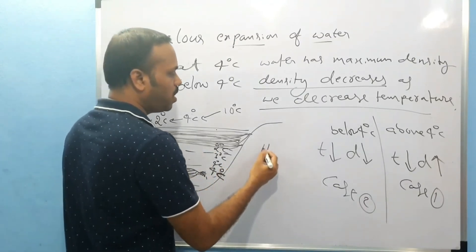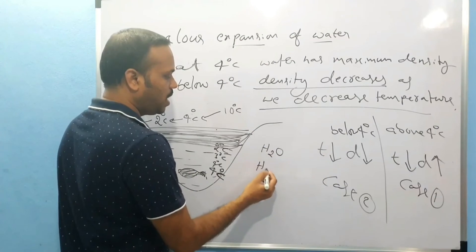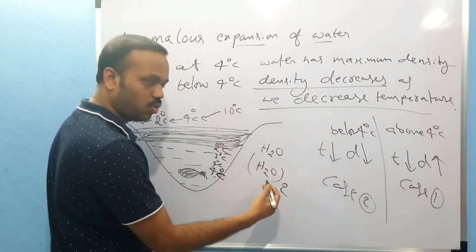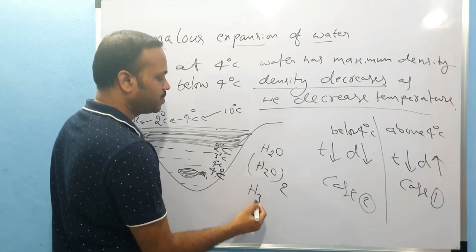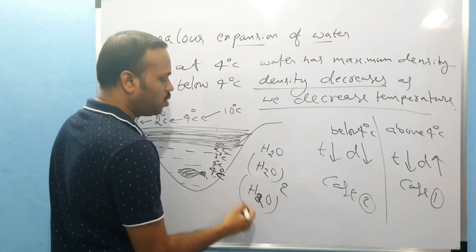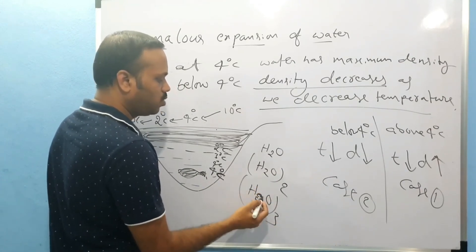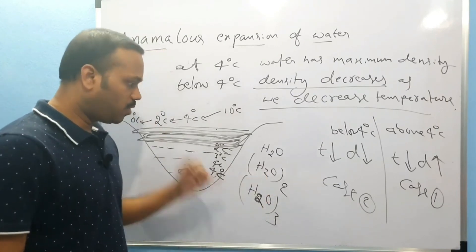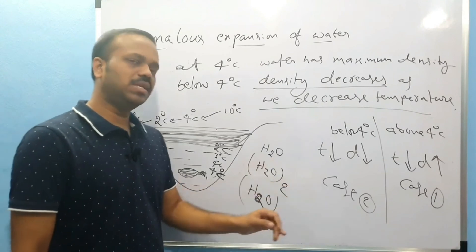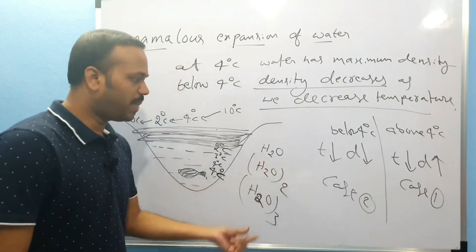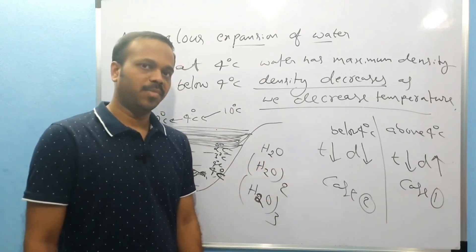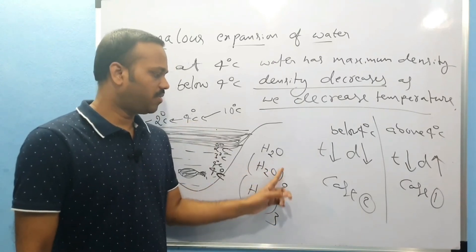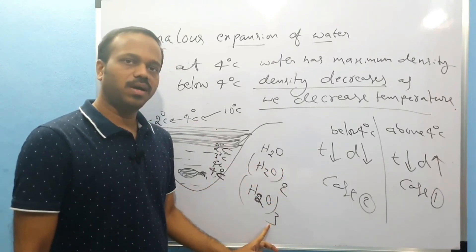There are H2O molecules in water. H2O has 3 atoms per molecule. There are molecules in friendship groups — some are single molecules, some are in groups of 2 or 3. There are some percentages of each. You have single molecules, 2-molecule clusters, and 3-molecule clusters contributing to the behavior.